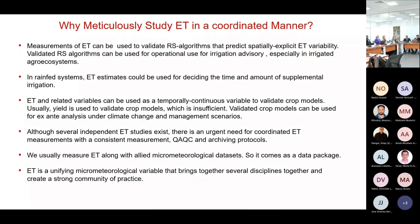Why do we need coordinated measurement of ET in the region? Measurements of ET can be used to validate various remote sensing-based algorithms that could estimate evapotranspiration, so that we can have a spatially explicit understanding of the ET distribution. If we have ET estimations that we are confident about, they can be used for operational purposes like irrigation scheduling for different farms — because we cannot measure ET at every farm, so we have to rely on a scaling strategy like remote sensing.